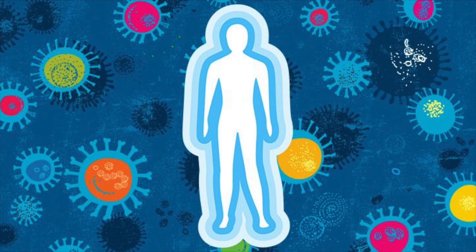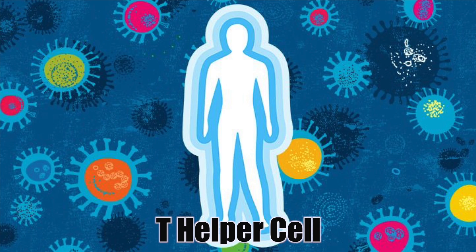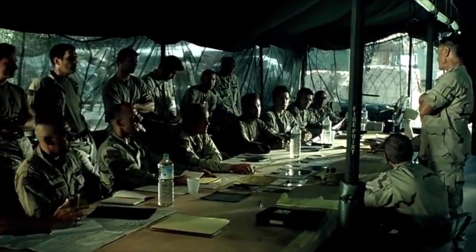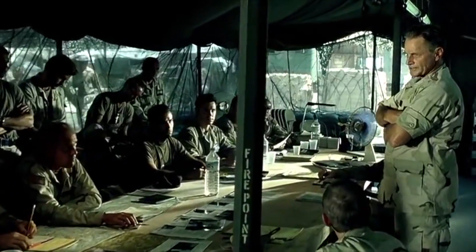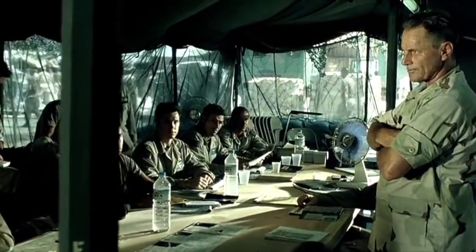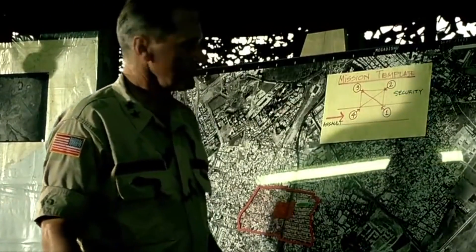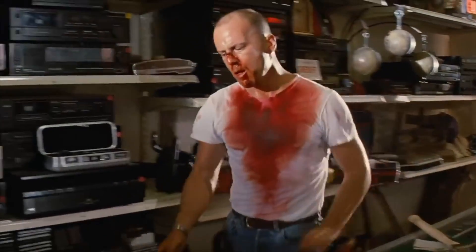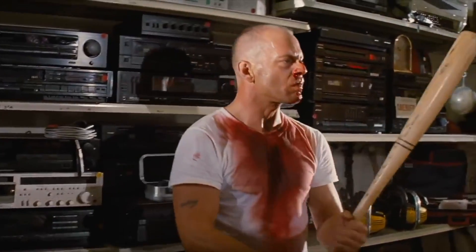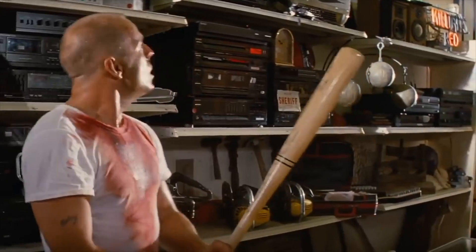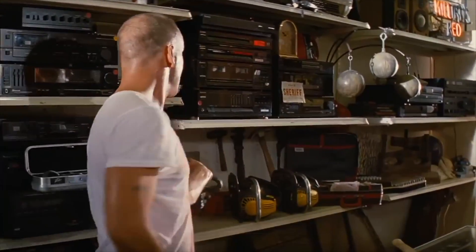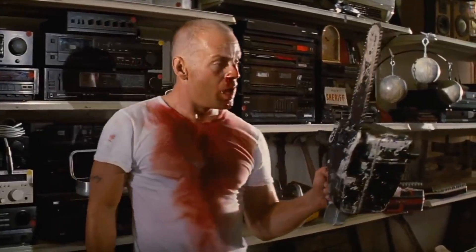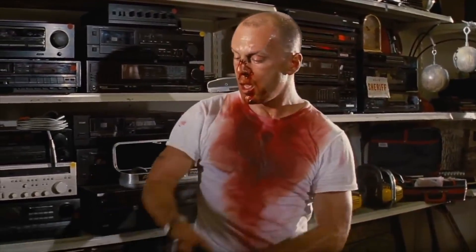This system is all coordinated by the T helper cell. I look at this cell like the general that coordinates the plan of attack and recruits the specific types of immune cells needed for the battle. It also makes estimations and judgments about what type of weaponry and force your body needs to overcome the enemy — whether that's a virus, bacteria, or some other pathogen.